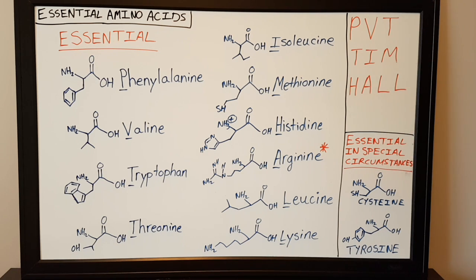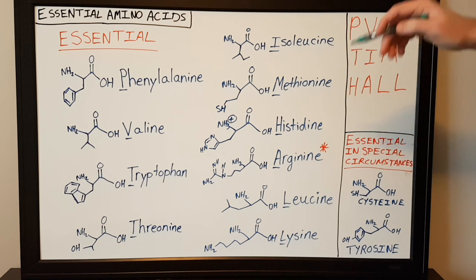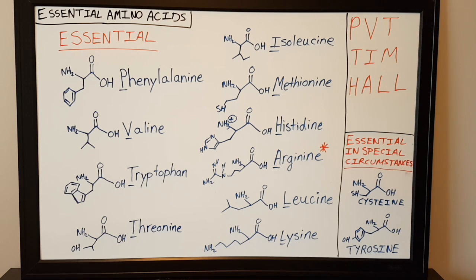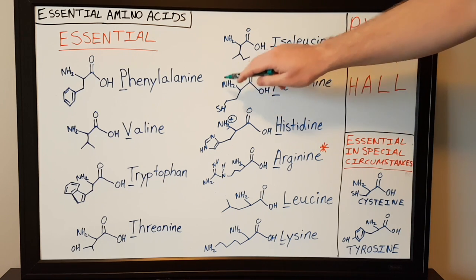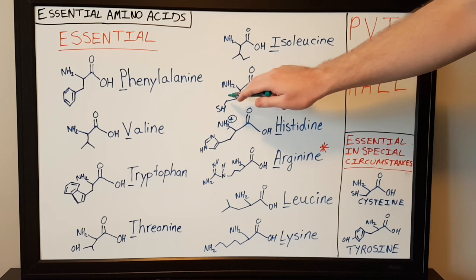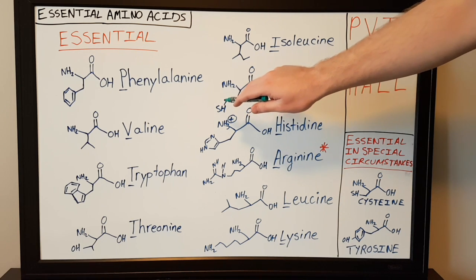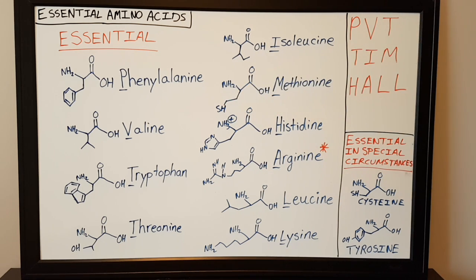The next amino acid is methionine. Think of it as an alanine with another carbon and then a sulfhydryl group attached to it. Methionine is one of two amino acids that contain a sulfur group, which is essential for organismal life.